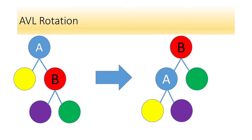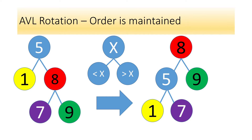Let's put actual values into the AVL rotation and follow the rule: less to the left, more to the right. Start with a 5, 1 to the left, 8 to the right. The 8 has a 7 and a 9. After implementing the rotation function for the AVL, nothing's changed in terms of ordering — 8 is now at the top with 5 and 9, and 5 has 1 and 7. Less to the left, more to the right is maintained. The rotation preserved the structure and sorting strategy of the tree.